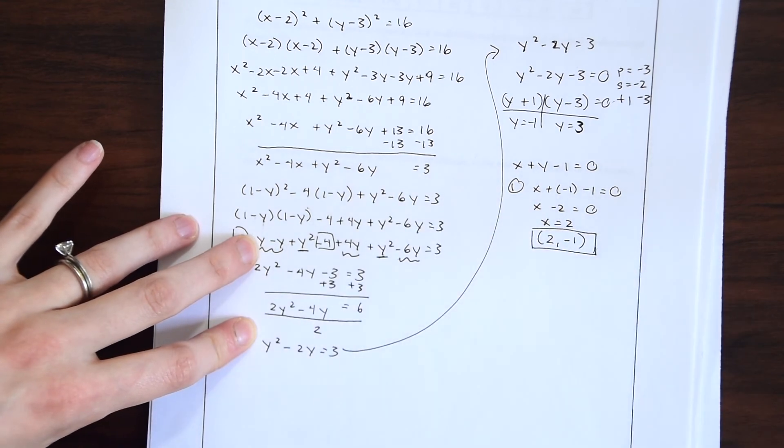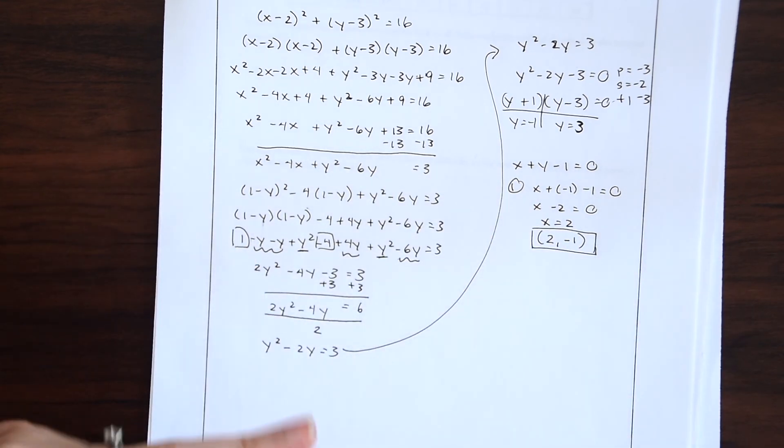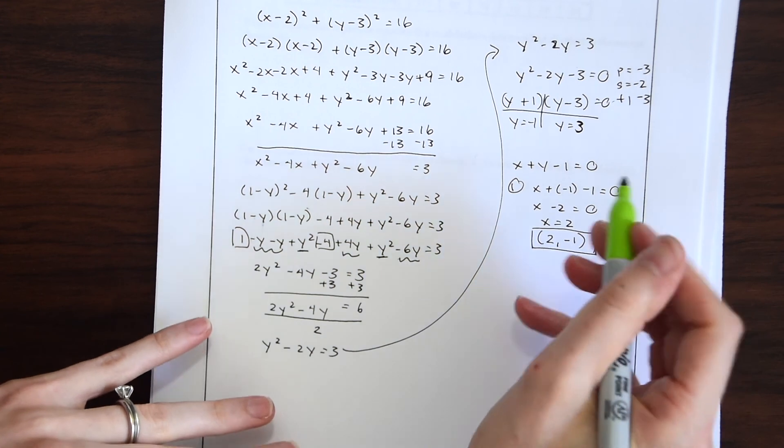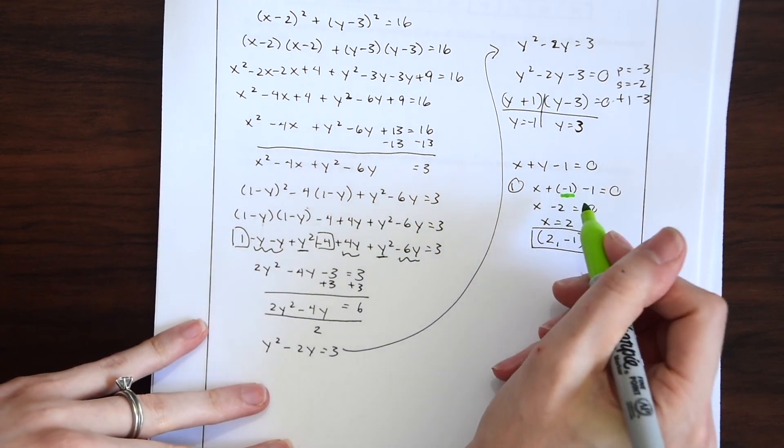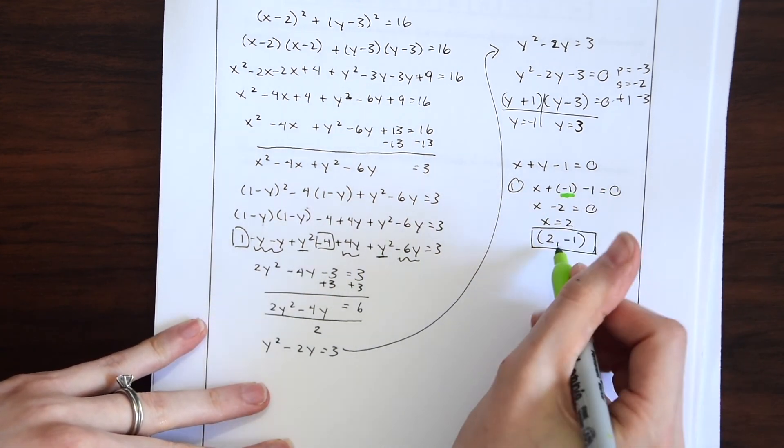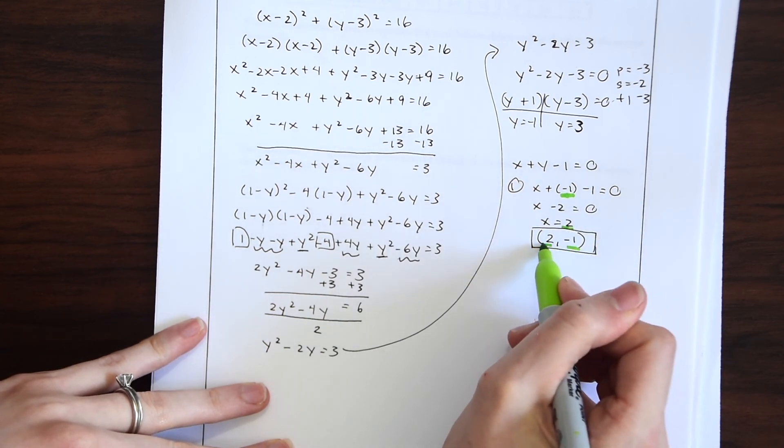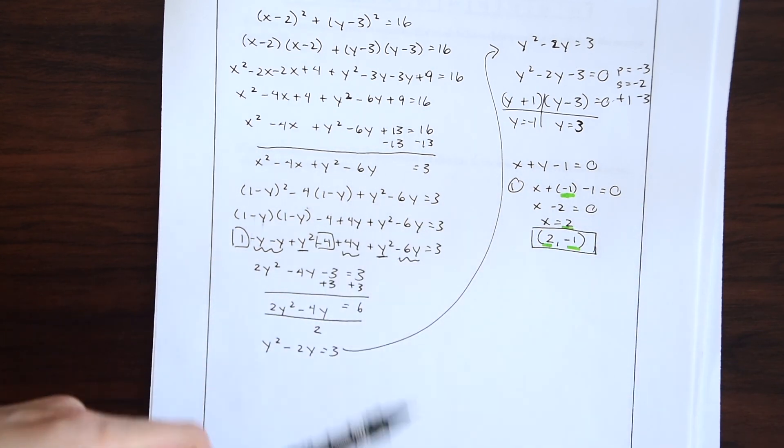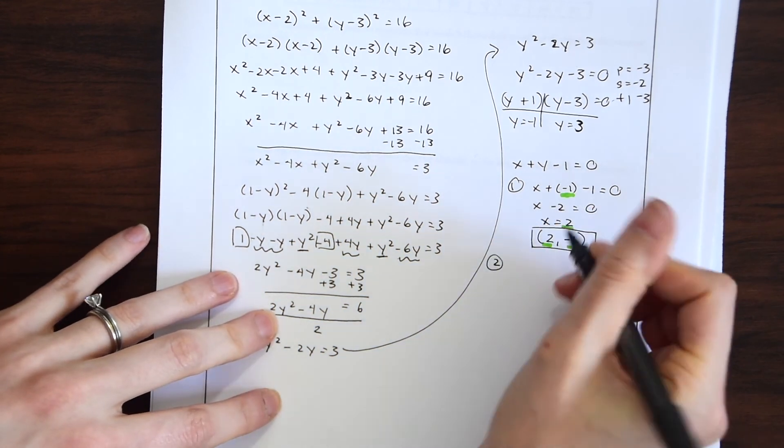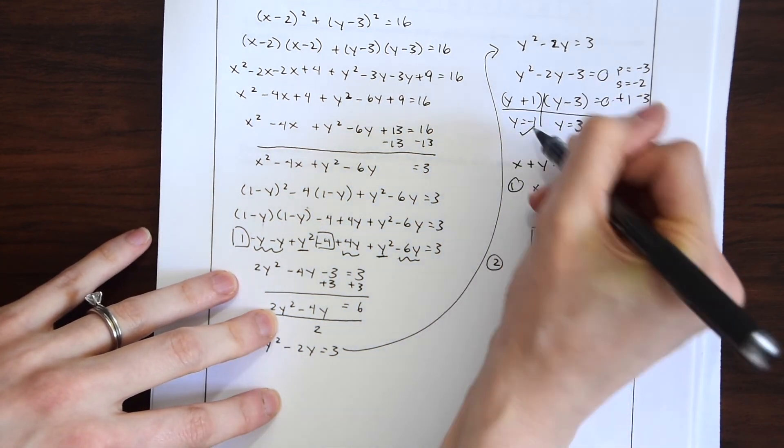So that's one of our answers. But we're going to have two answers. So here we plugged in negative 1 for y. And that's why we have this y coordinate here. And then we ended up with x equals 2. So that's why we have this x and y pair. Okay.